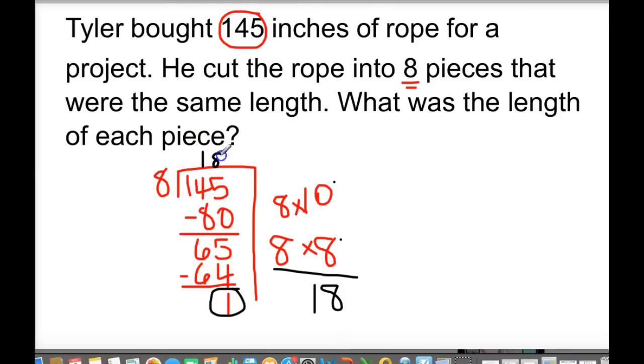Alright, now, that's not it because the question is asking me what was the length of each piece. I can't really say, if I'm trying to answer this correctly, I cannot say 18, remainder 1. What I have to do is I have to take this 1 because I have 1 inch left over. So, I had 145 inches. I divide it into 8 groups. I have 18 inches, but then I have this little inch left over. So, what do I do with this inch? Well, actually, when you're cutting up a rope, you can cut up that inch, and you can put that into each of your groups.